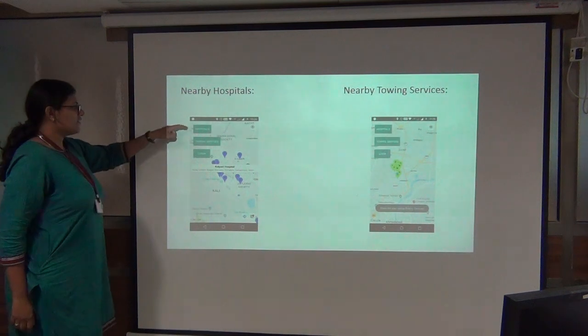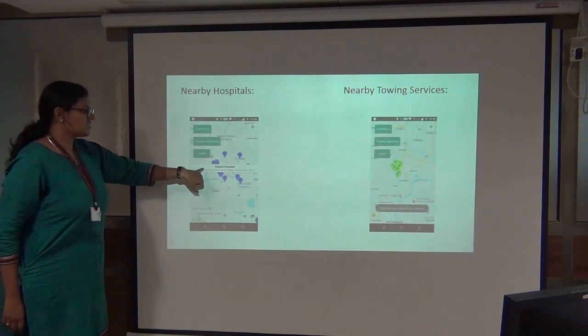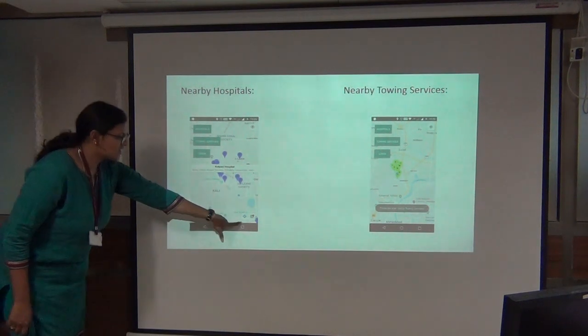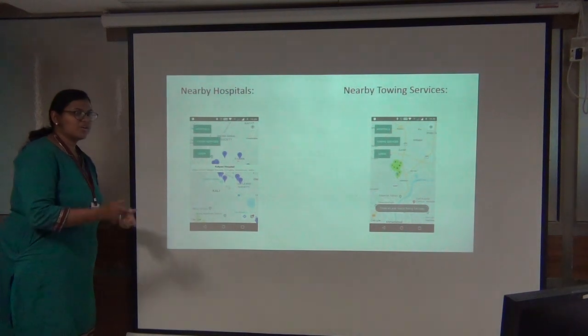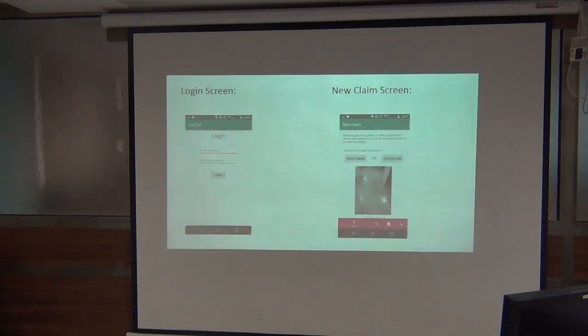In nearby hospitals, when you click on the hospitals, these are the hospitals shown nearby. So you can just tap on one, the details will be shown. Or you can just click these buttons for directions and opening in Google Maps. Similarly, that is the towing services. The login screen and the new claims.